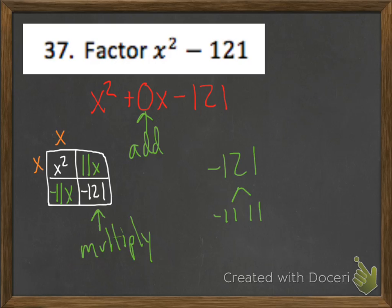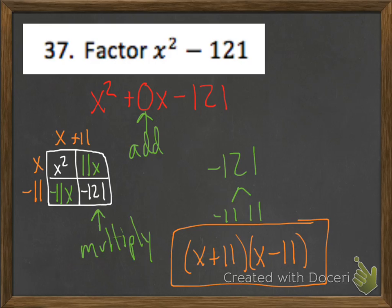The only two numbers that do that are negative 11 and positive 11. So I put those in the boxes. x squared is x times x, 11x comes from x times 11, and negative 11x from x times negative 11. So my two factors are x plus 11 times x minus 11.